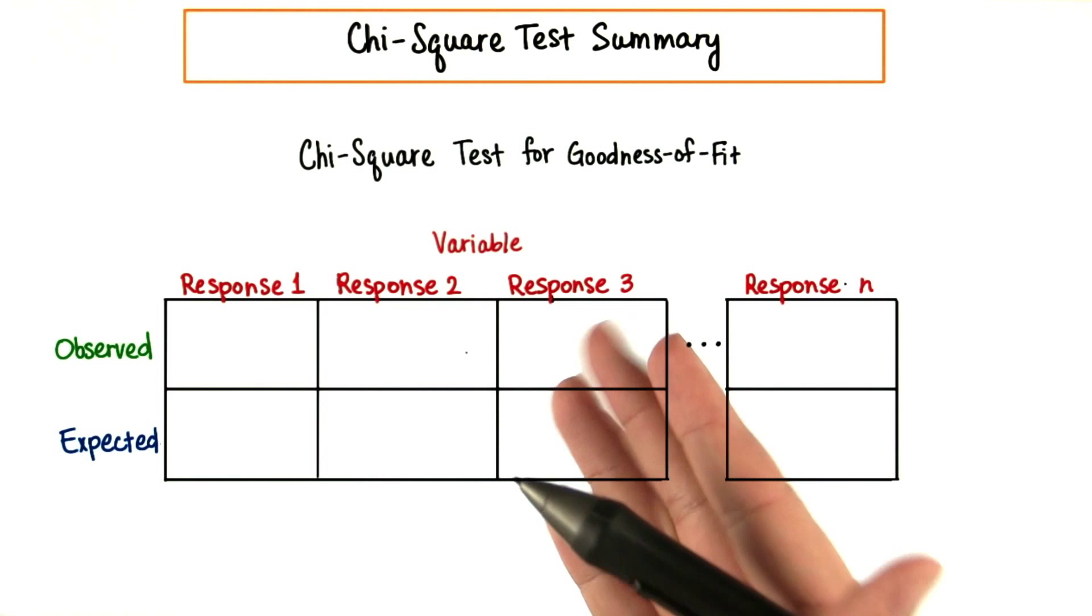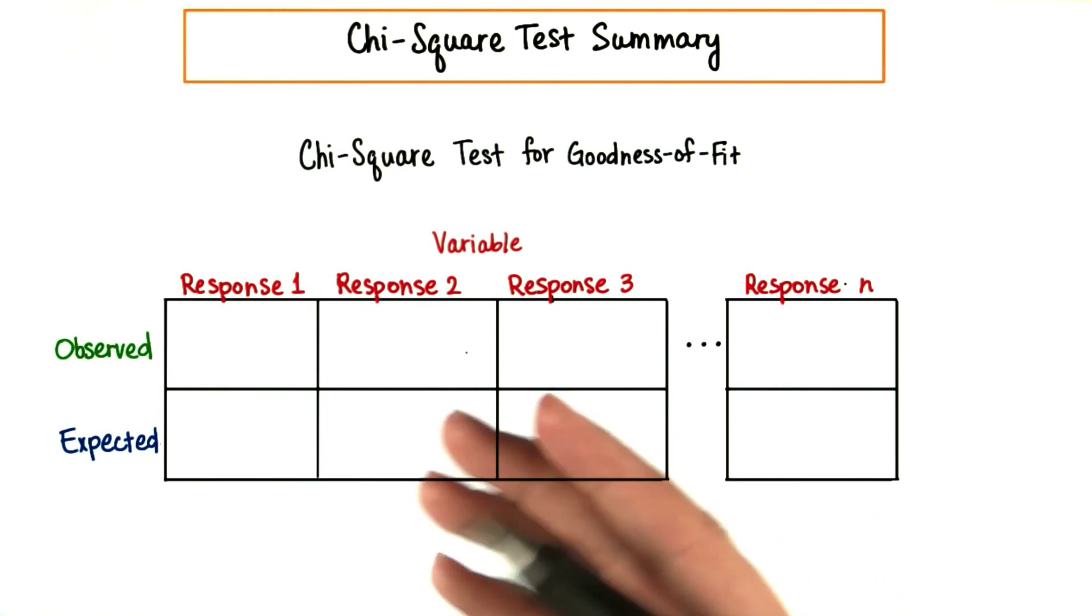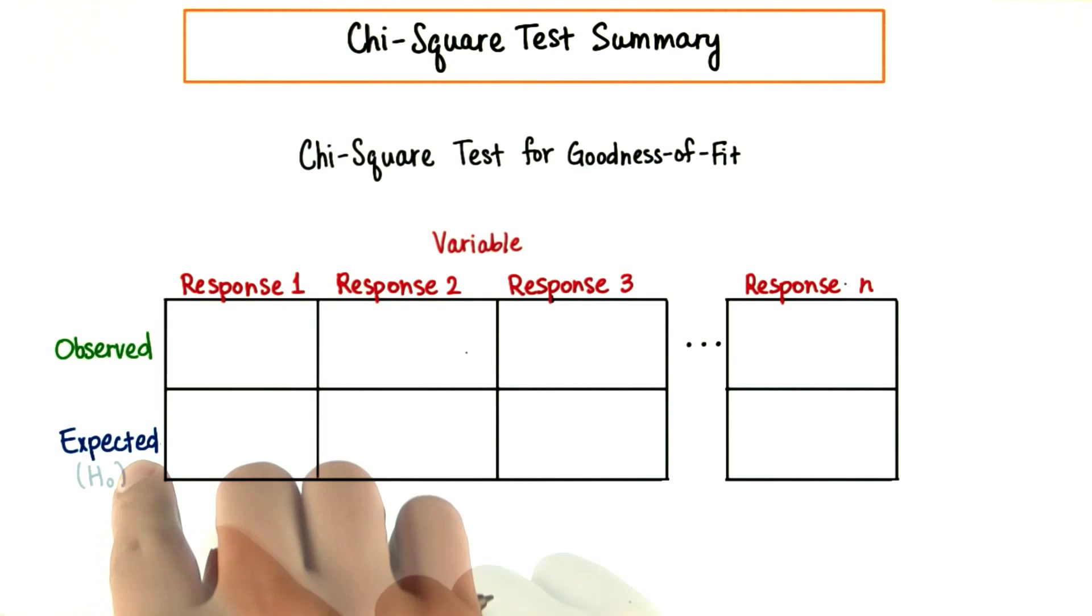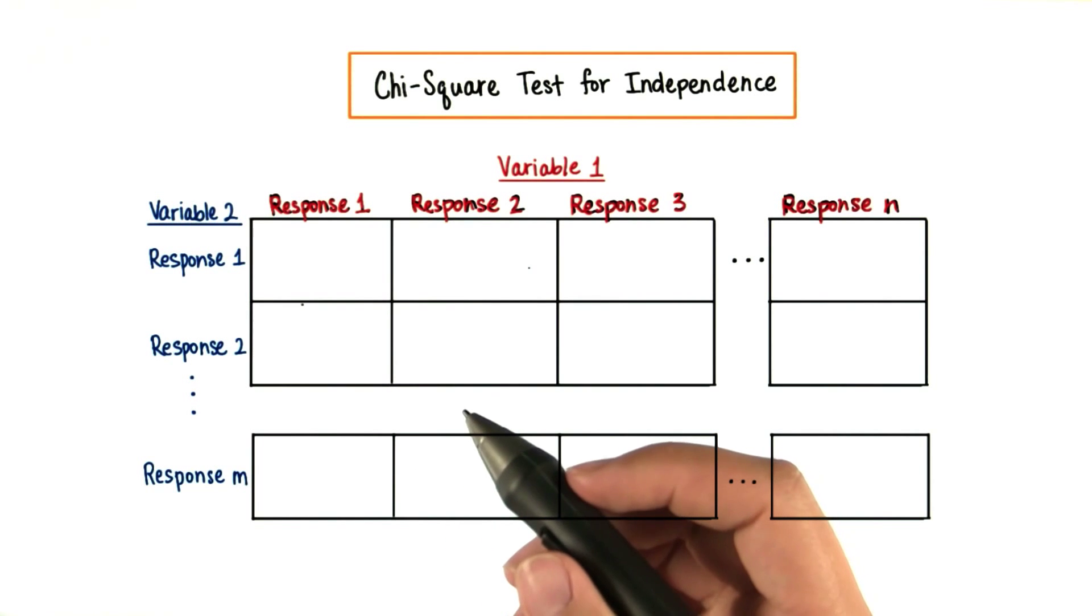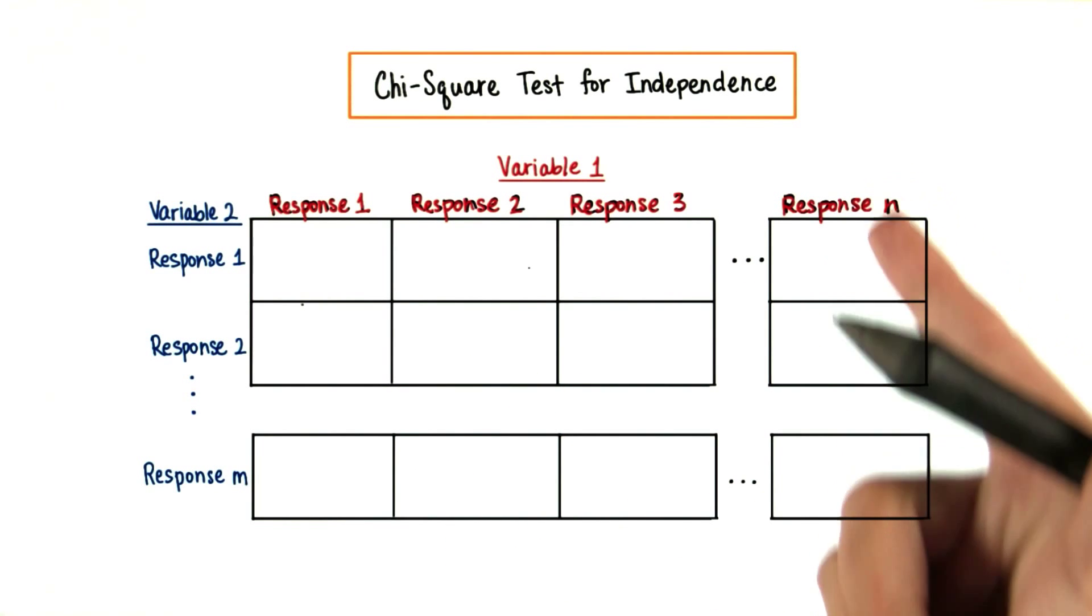In the case of goodness of fit, our expected values are what we guess for our null hypothesis. However, in the case of independence, our expected values are based on the results of our marginal totals.